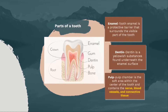Firstly, enamel. Tooth enamel is a protective barrier that surrounds the visible part of the tooth. Tooth enamel is the hardest substance in the human body and healthy enamel is resistant to cavity-causing bacteria. Dentin is a yellowish substance found underneath the enamel surface. Next, pulp. The pulp chamber is the soft area within the center of the tooth and contains the nerve, blood vessels and connective tissue.